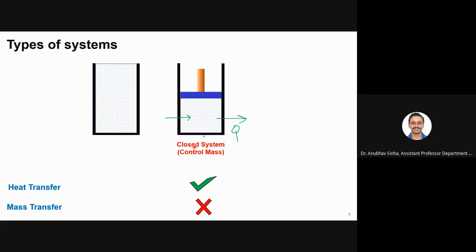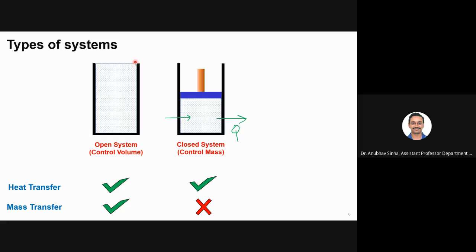The opposite of a closed system is an open system. If I remove the piston, it is just a cylinder — you contain some mass and any other mass could come in or go out. This is called an open system or control volume. For this open system, both heat and mass transfer are possible — you can take out mass, add mass, add heat, whatever you want.